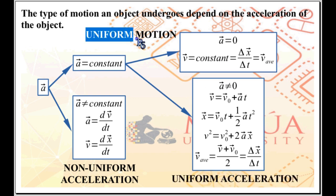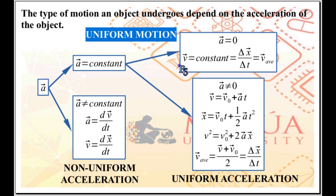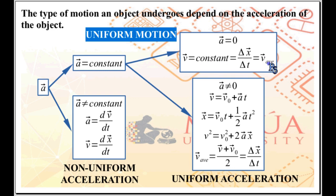The acceleration may also be constant at a non-zero value, in which case you have uniform acceleration. For uniform motion, acceleration is constant at zero, so the rate of change of velocity is zero, meaning the velocity is not changing — it is constant. For constant velocity, V equals dx/dt reduces to V equals delta x over delta t, or simply x over t. Since velocity is constant, the average velocity V-average also equals delta x over delta t.